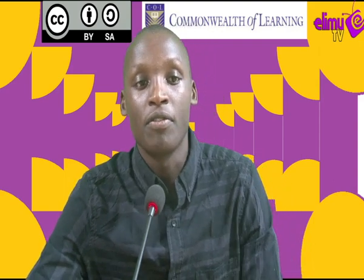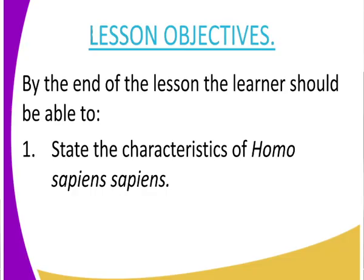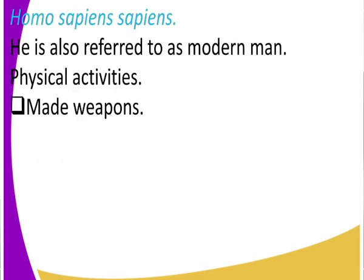This is Elimu TV, where you get to watch and learn. By the end of the lesson we'll get to understand the characteristics of Homo Sapiens Sapiens. Now, who is this Homo Sapiens Sapiens? This is modern man — it can also be referred to as modern man. You, the I — we are Homo Sapiens Sapiens. It is a biological term used in replacement of modern man.